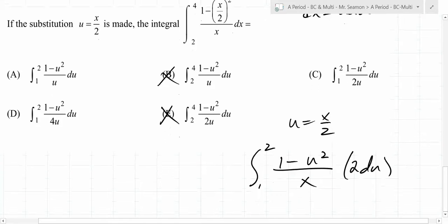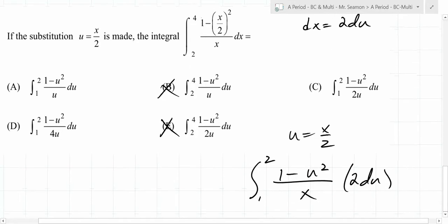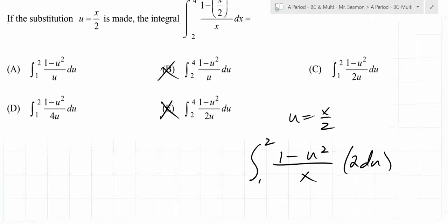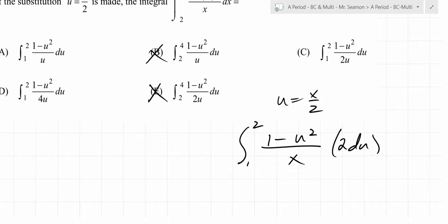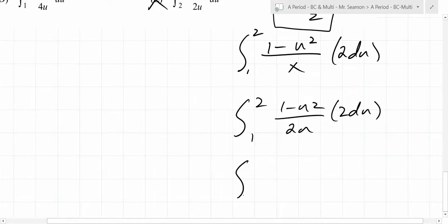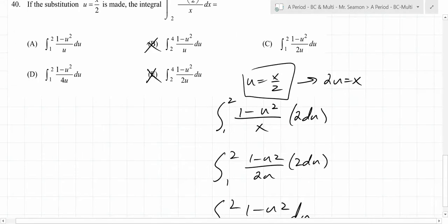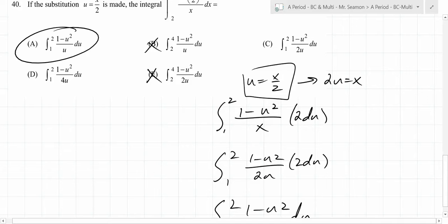Then you end up with 1 minus u squared over x, and what is dx? 2 du. We still have that x in the denominator. You multiply both sides by 2, so you get x equals 2u. So you end up with the integral from 1 to 2 of 1 minus u squared over 2u times 2 du. What cancels? You end up with the integral from 1 to 2 of (1 minus u squared) over u du. Is that one of the answers? Yeah, the first one.